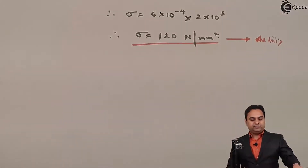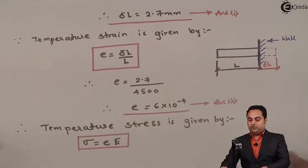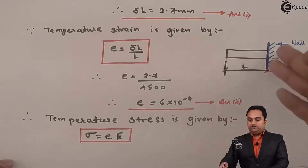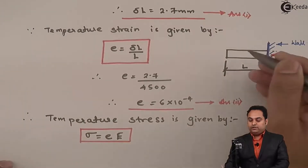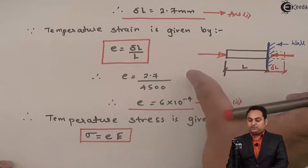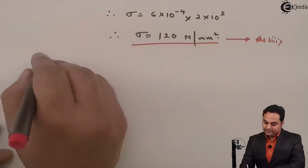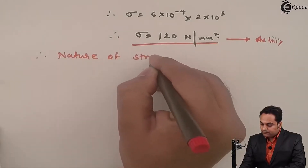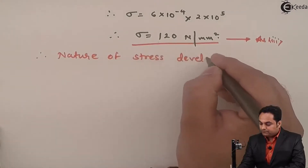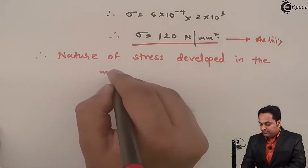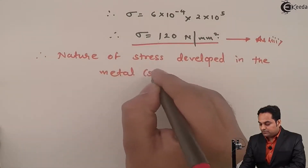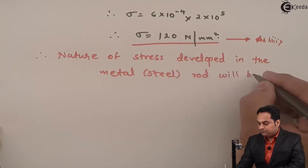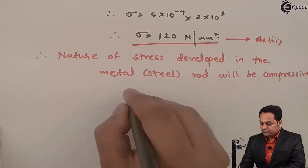Now regarding the nature of stress induced: when the metal rod was expanding freely, no stress was developed. Once we have a wall, there is a force acting from the wall causing compression of the metal rod. Therefore the nature of stress developed in the steel rod is compressive stress.